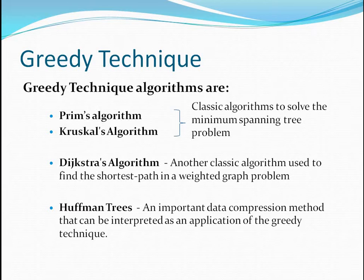There are several greedy algorithms. Among those, we are going to deal with Prim's algorithm, Kruskal's algorithm, Dijkstra's algorithm, and Huffman Trees. The first two algorithms, Prim's and Kruskal's, are classic algorithms used to solve the minimum spanning tree problem. Dijkstra's algorithm is another greedy technique used to find the shortest path in a weighted graph. And Huffman Trees is an important data compression method which can be interpreted as an application of the greedy technique.